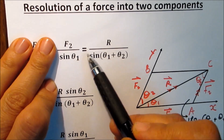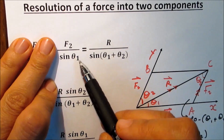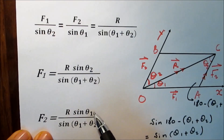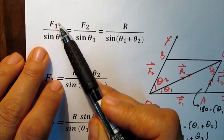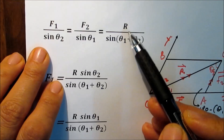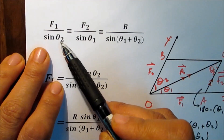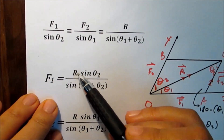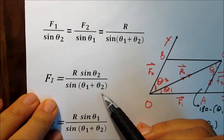By the sine rule and cross multiplication: F2 over sine theta1 equals R over sine(theta1 plus theta2), so F2 equals R sine(theta1) over sine(theta1 plus theta2). Similarly, F1 over sine theta2 equals R over sine(theta1 plus theta2), so F1 equals R sine(theta2) over sine(theta1 plus theta2).